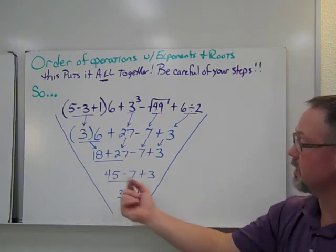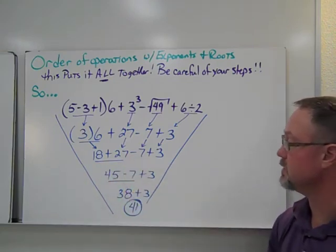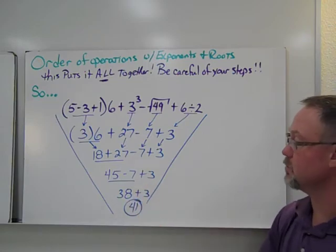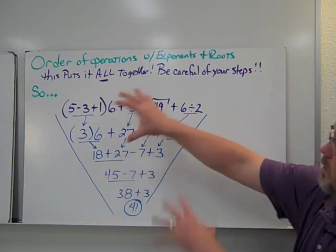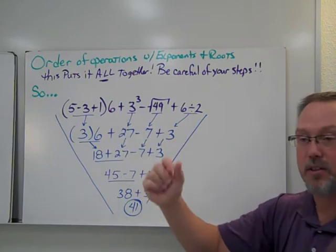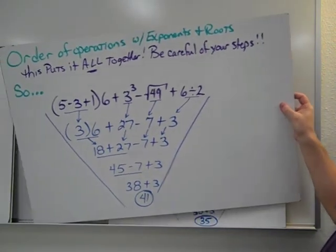And then I would just add and subtract on the way across. So 18 plus 27 is 45. 45 minus 7 is 38. 38 plus 3 gives me 41. So we're just putting it into it. We're combining everything that we've done in this section into these types of problems.